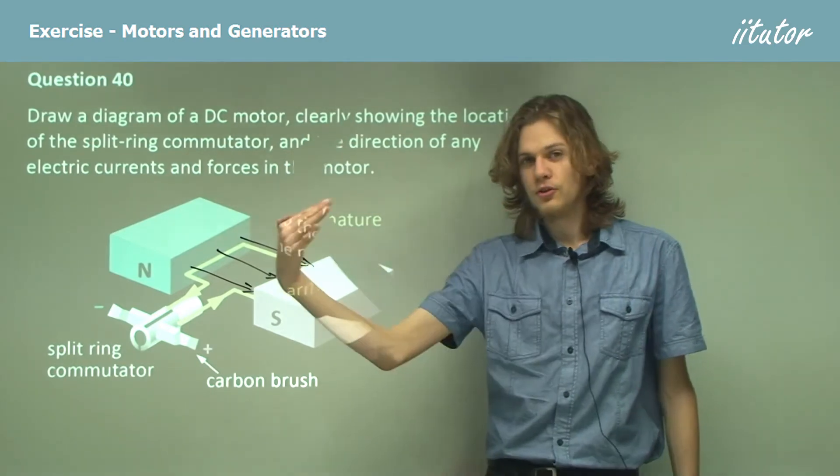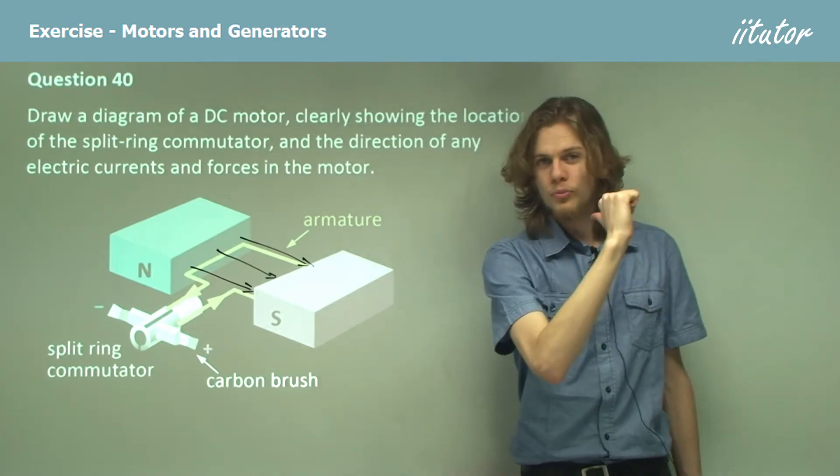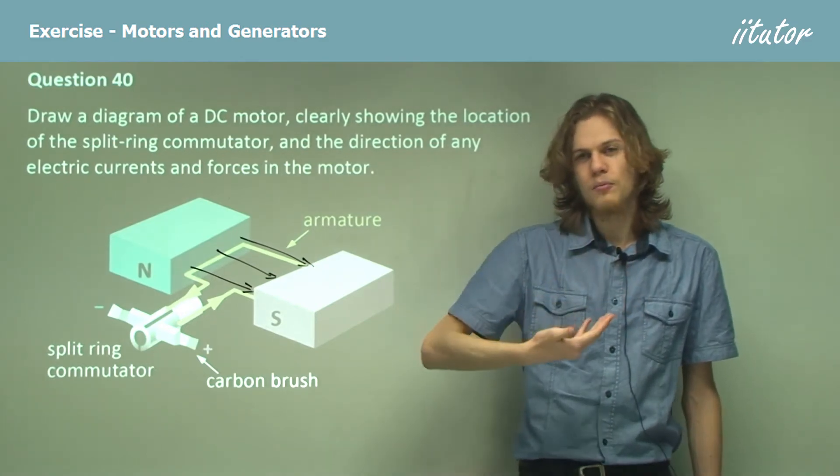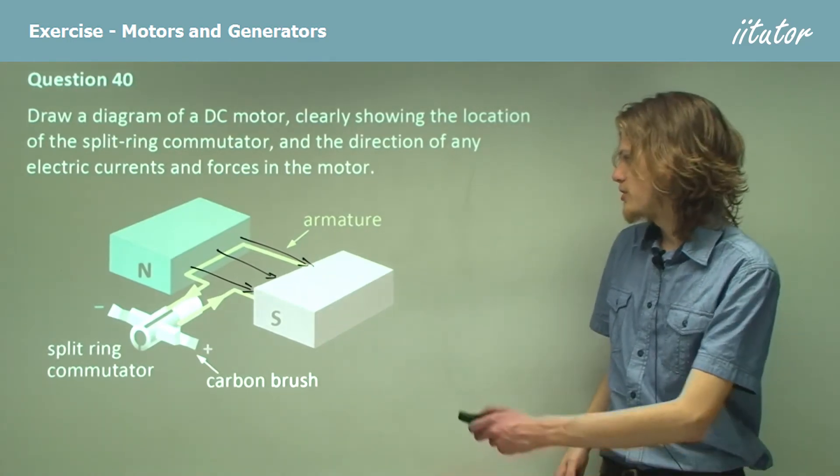If the field is going this way, the force will be down when the current moves towards me. And it will be up if the current moves away from me, right? So our forces are going to look like this.